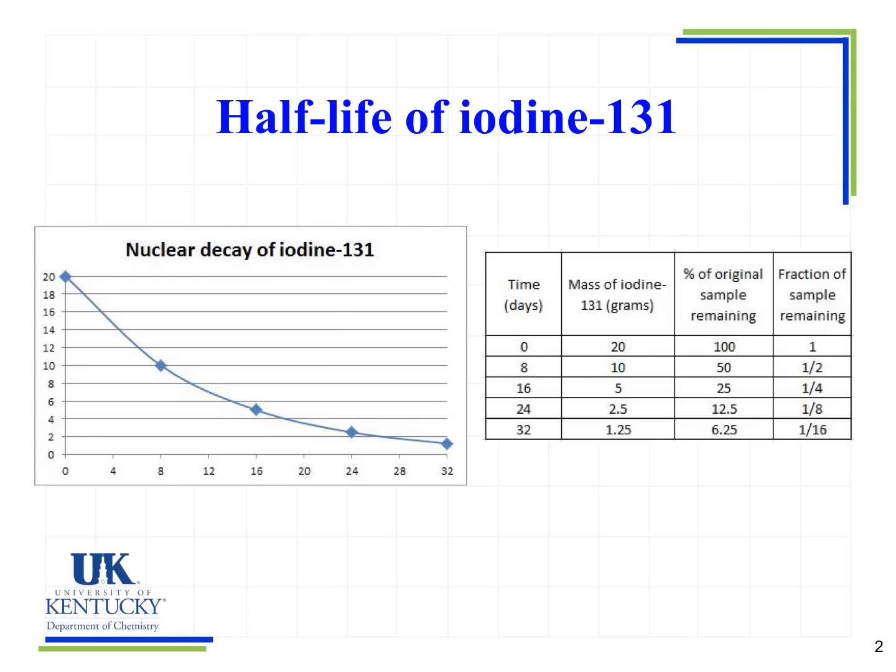Here we have some information about the decay of iodine-131. Iodine-131 is radioactive — it is an unstable isotope, so it's going to do something in order to become more stable. What we're going to look at is the time it takes for those isotopes to decay or emit a particle or energy in order to become more stable.